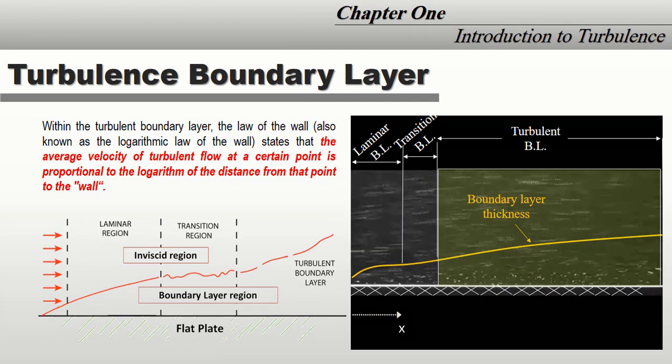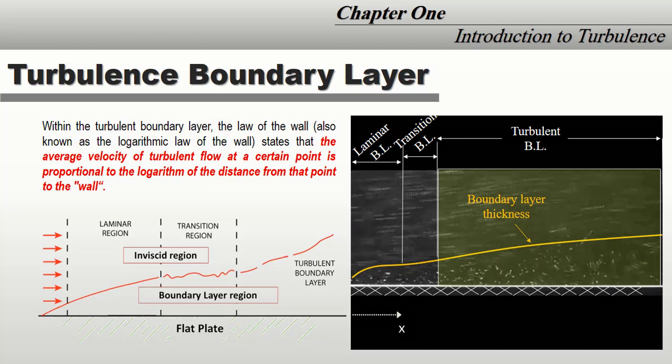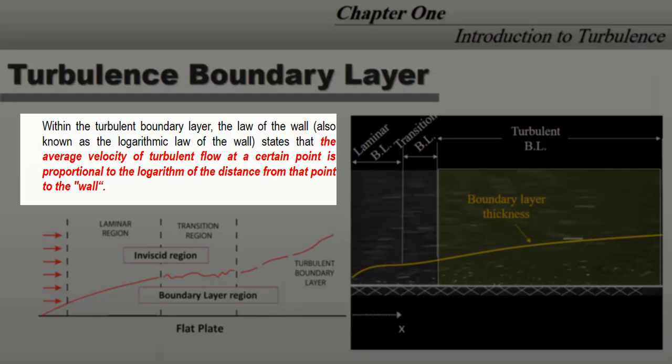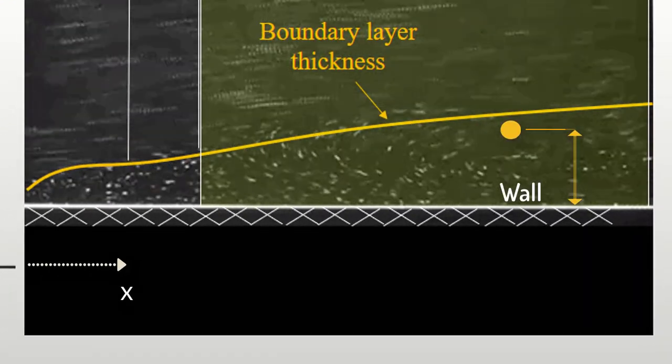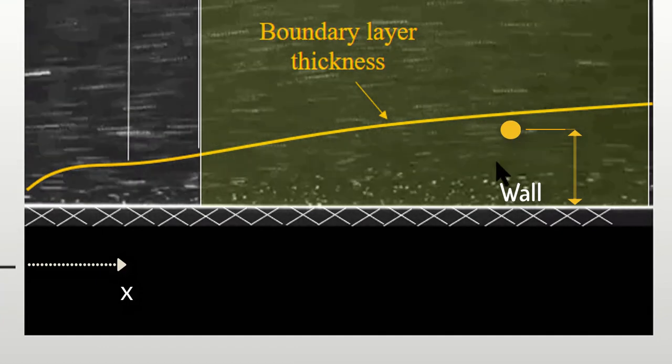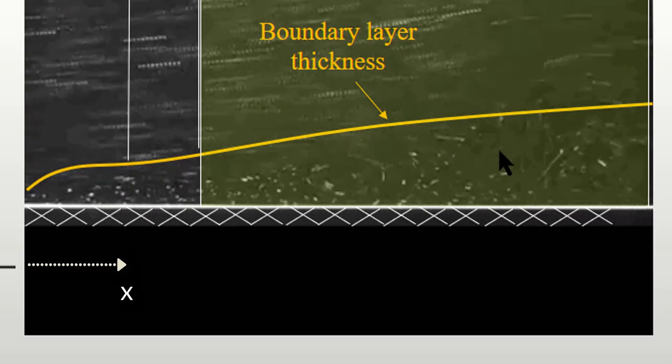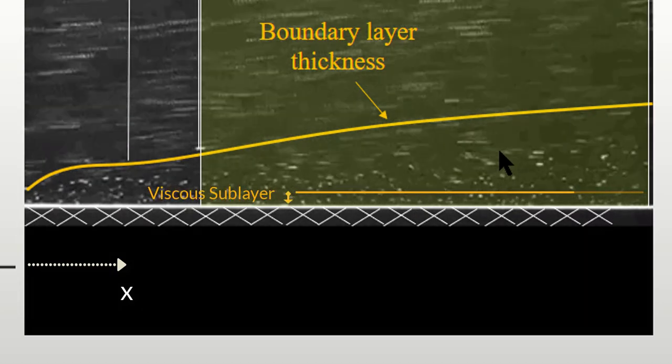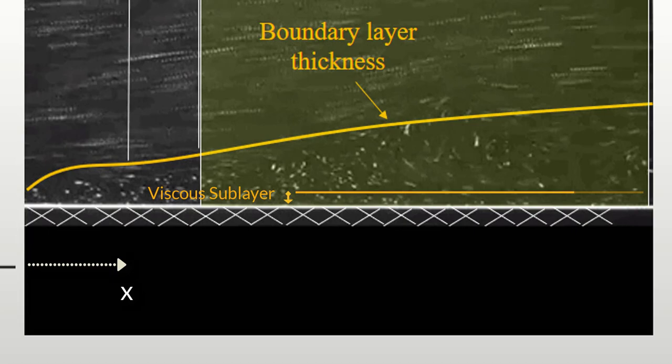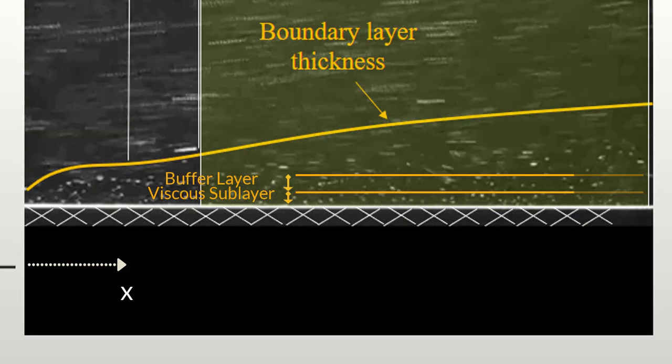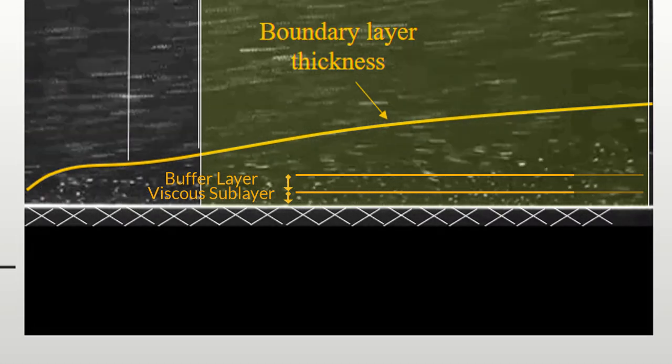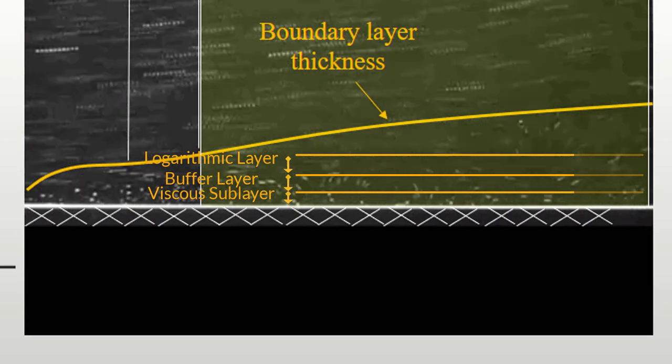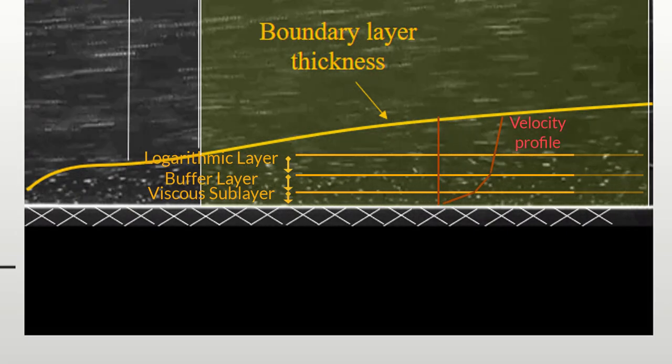I want to mention that the turbulent boundary layer is divided into three distinct regions due to the logarithmic law of the wall, which states that the average velocity of turbulent flow at a certain point within the boundary layer is proportional to the logarithm of the distance from that point to the wall. The first layer is called the viscous sublayer, where fluid is dominated by viscous effects. The second is the buffer layer, a transition region between the viscosity-dominated and turbulence-dominated parts of the flow. And the logarithmic layer, where turbulence dominates and the velocity profile varies very slowly.